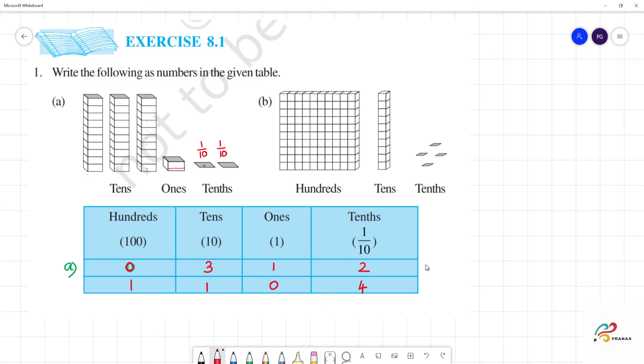So how to write in this decimal? The answer is 31.2. The answer is 110.4. This is the answer.